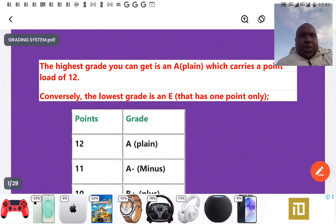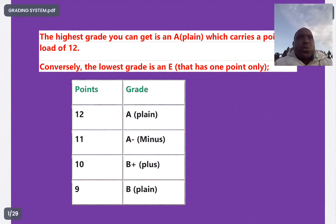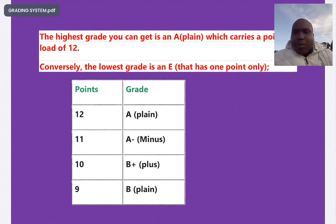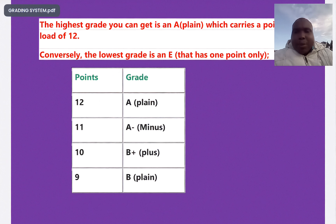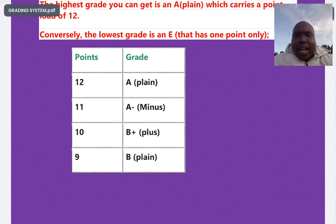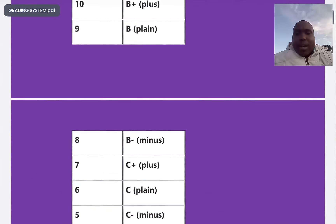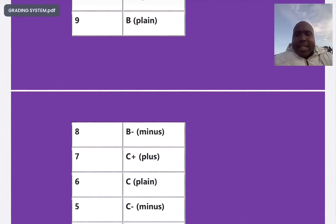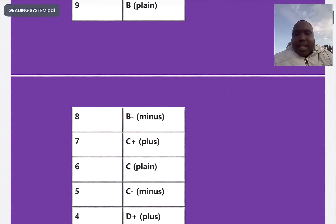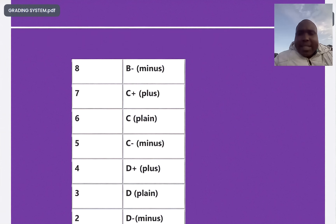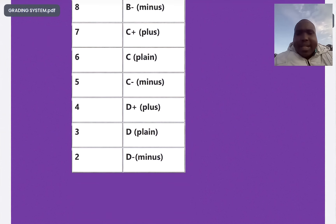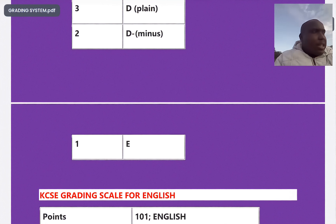Welcome. I want to give you the grading system for KCSE 2025. As you all know, A has got 12 points, A minus has got 11 points, B plus has got 10 points, B plain 9 points, B minus 8 points, C plus 7 points, C plain 6 points, C minus 5 points, D plus 4 points, D plain 3 points, D minus 2 points, and finally E is 1 point.